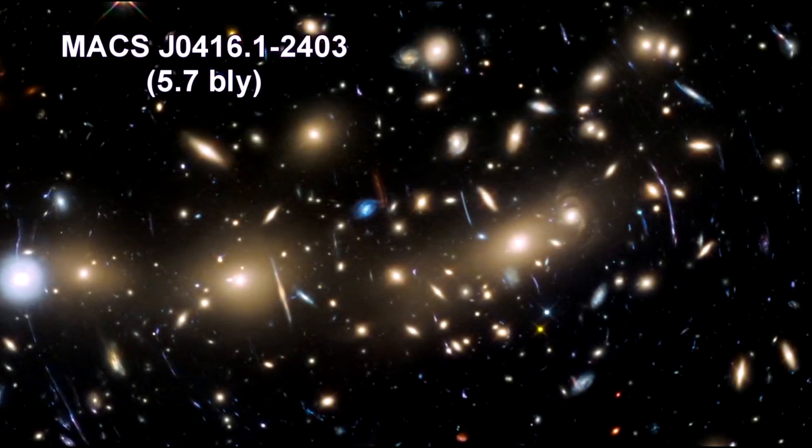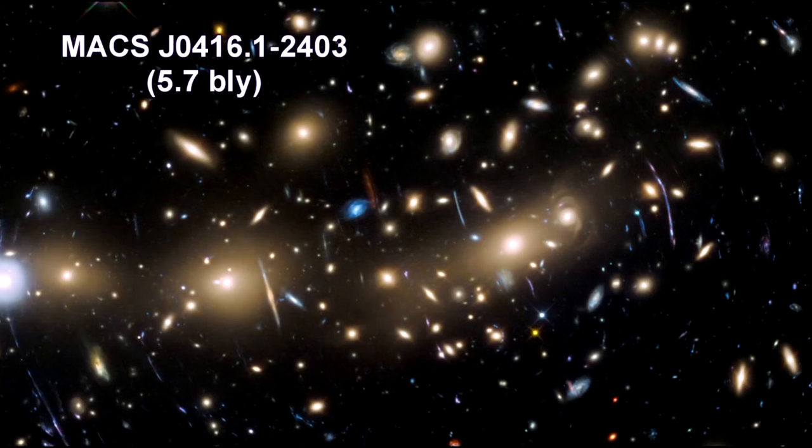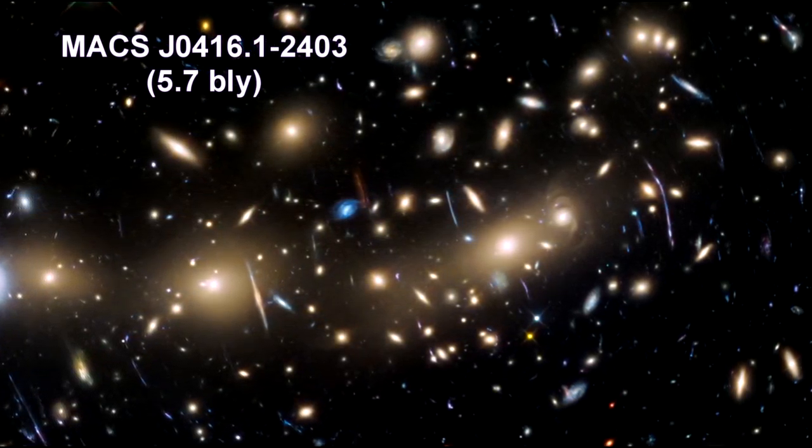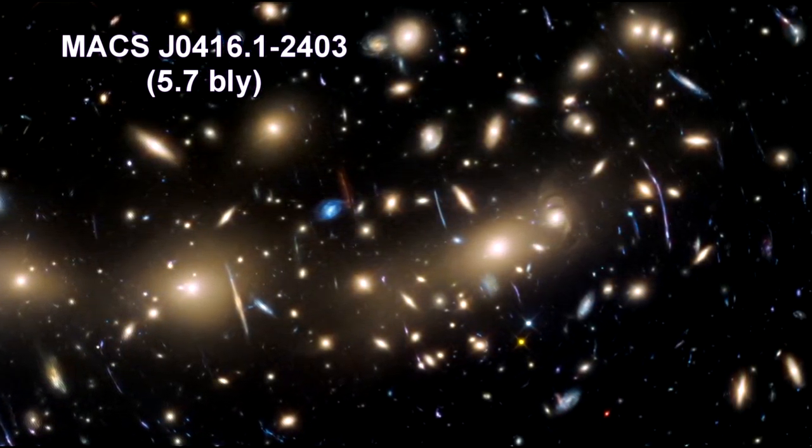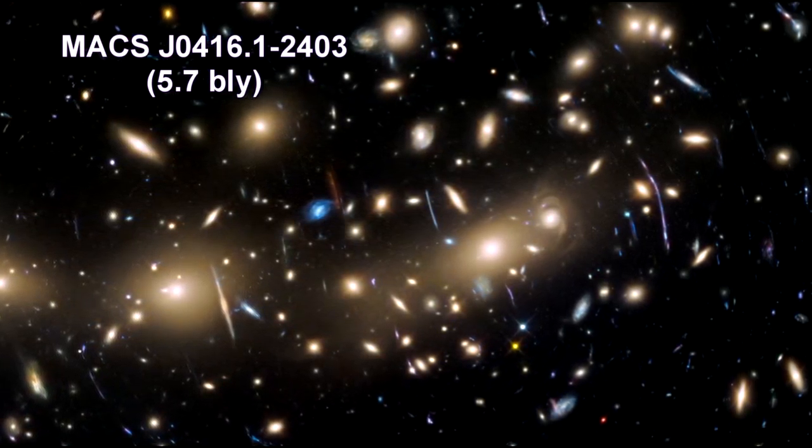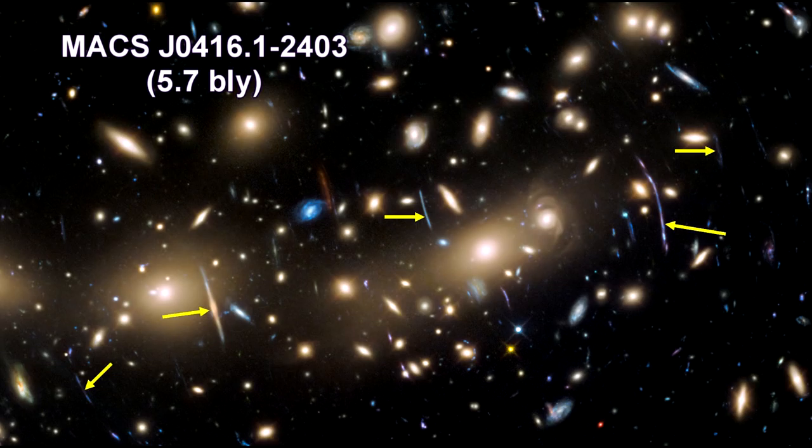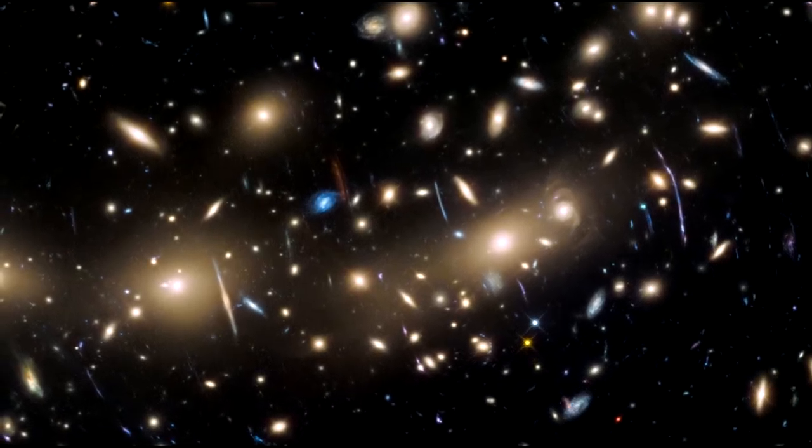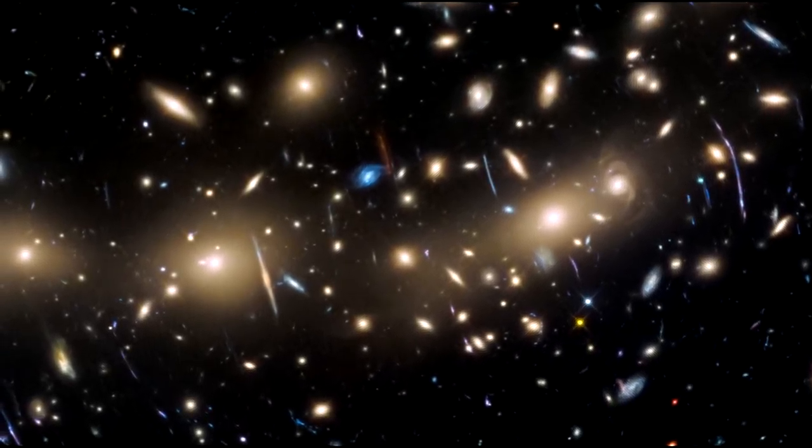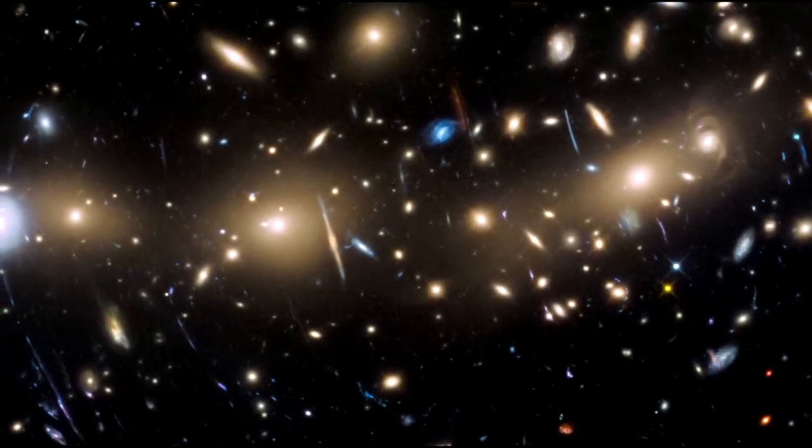These foreground galaxy clusters are magnifying the light from the faint galaxies that lie far behind the clusters themselves. These faint lensed galaxies are around 12 billion light years away. It's the gravitational lensing that allows us to see that far back in time. Without the magnification, these galaxies would be invisible for us.